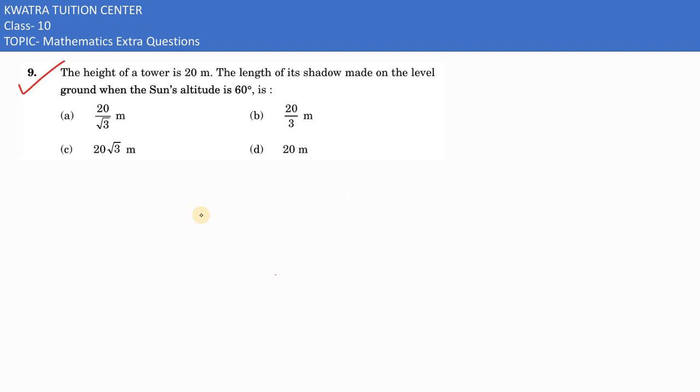Let's see the ninth one. It says the height of a tower is 20 meters, and the length of the shadow made on the level ground when the sun's altitude is 60 degrees. Now the sun's altitude is 60 degrees and this is the shadow being formed. So where will our sun's altitude be?